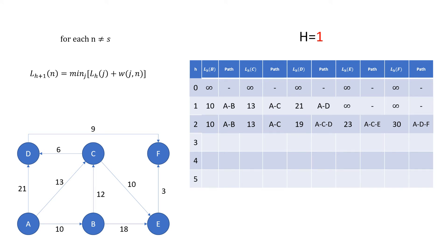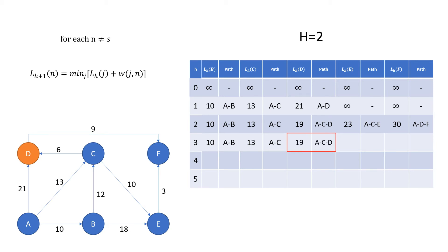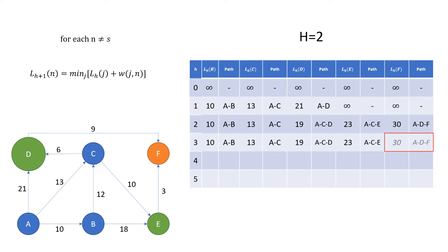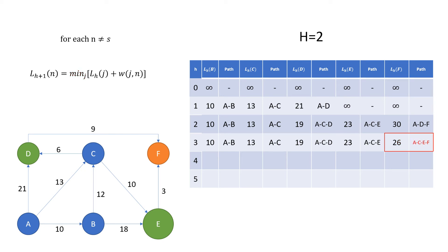So we can continue on to iteration h equals 2. Starting again with node b, we get the same results as previous iterations. This also goes for node c, node d, and node e. With node f, we again have the predecessors nodes d and e. Starting with node d as our predecessor, we get the same values as the previous iteration. Continuing on to node e as the predecessor, we perform the calculation again. Because the previous best route length for node e is no longer infinity, we perform the calculations again and get a new minimum value of 26. This path takes the route from node a through node c, then node e, to finish at node f. This then finishes off the iteration for h equals 2.